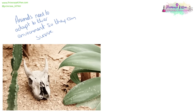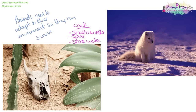Animals need to adapt to their environment to survive. Cacti are well adapted to a desert environment because they have shallow roots, spines to prevent them being eaten, and they can store water in their leaves. Snow foxes are white so they blend in, have small ears to reduce heat loss by reducing surface area, and have a very thick coat.